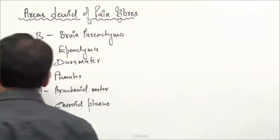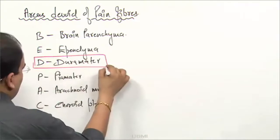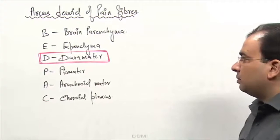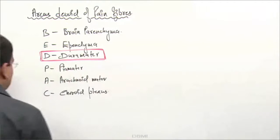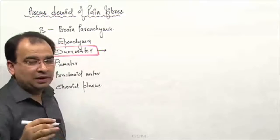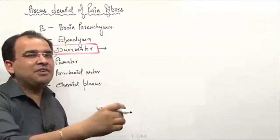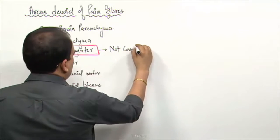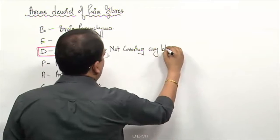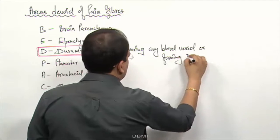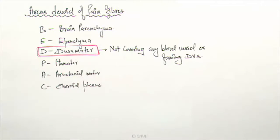The question is: how can dura mater be devoid of pain fibers, given that the pain of meningitis is elicited from the dura mater, and dura mater is extensively supplied by nerves? The answer is that only that part of the dura mater which is not forming any dural venous sinus or covering any blood vessel is devoid of pain fibers.